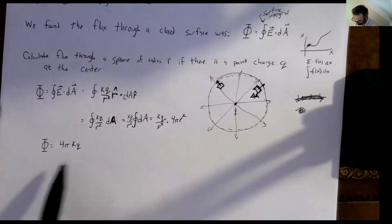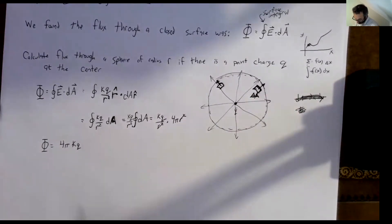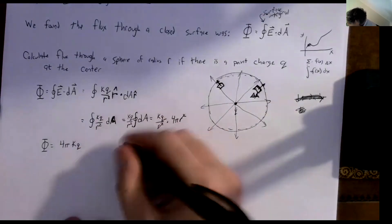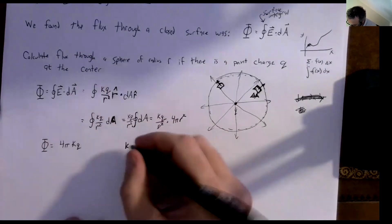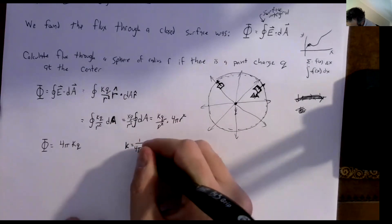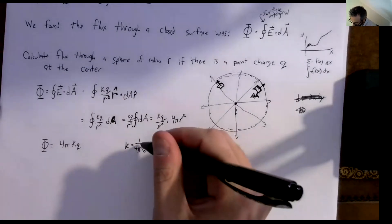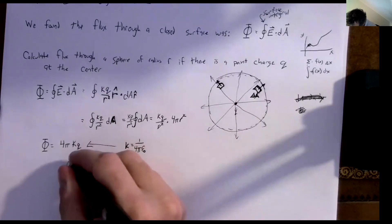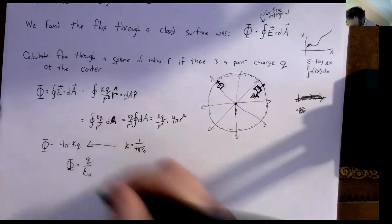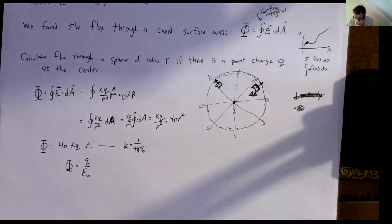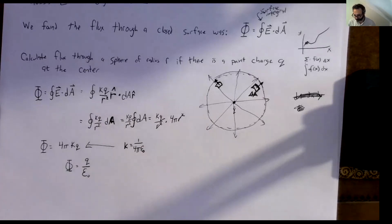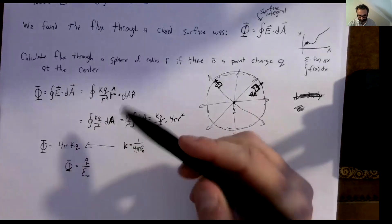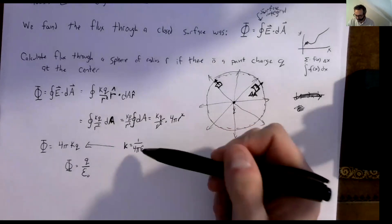So the flux through our sphere is just 4πkq — that simplifies down to just a constant times the charge on the inside. We can make this look even simpler if we remember that k equals 1 over 4π epsilon-naught. Replacing k with 1 over 4π epsilon-naught, the 4π cancels, and our flux is just q over epsilon-naught. Epsilon-naught is the permittivity of free space, 8.85 × 10⁻¹² C²/(N·m²).